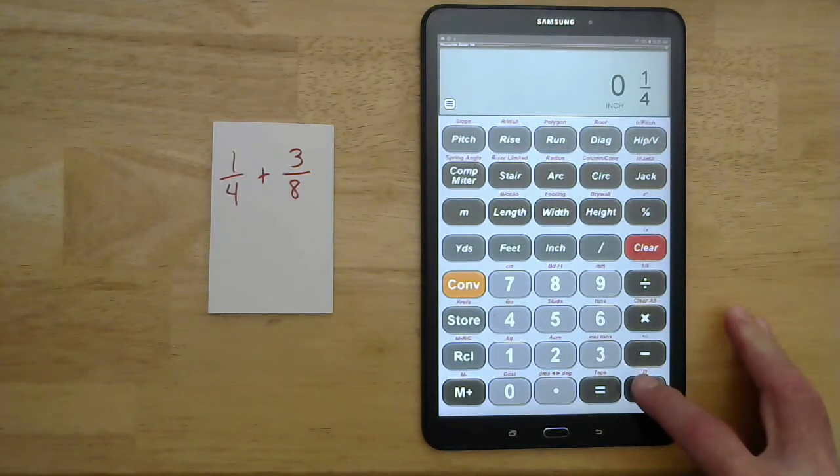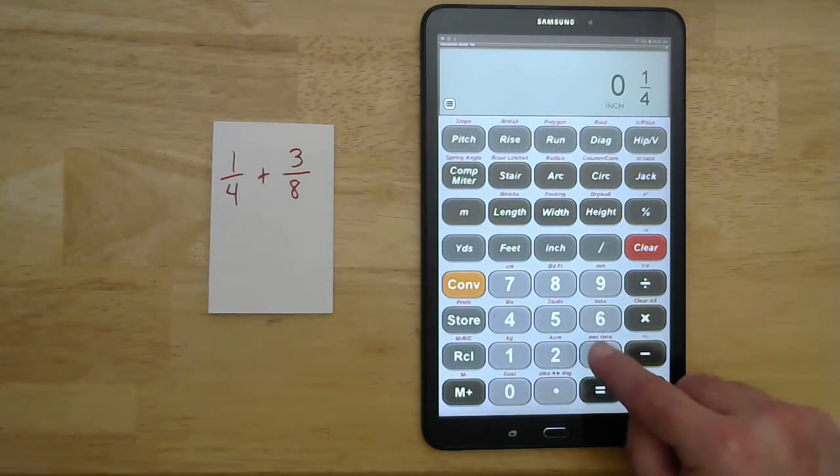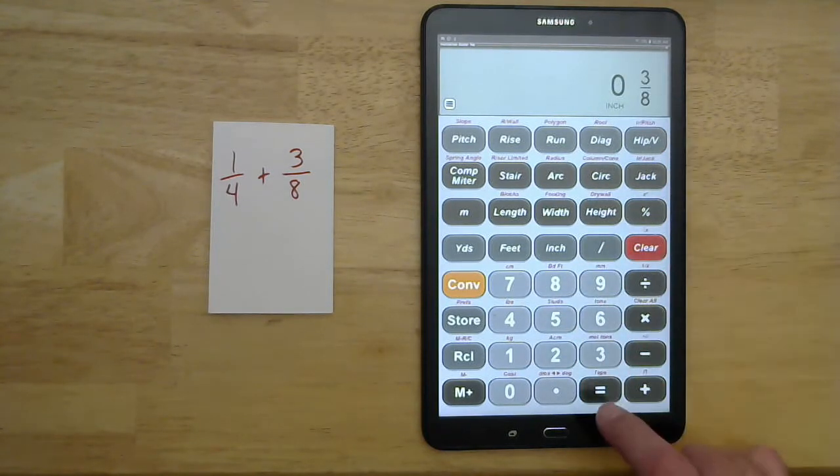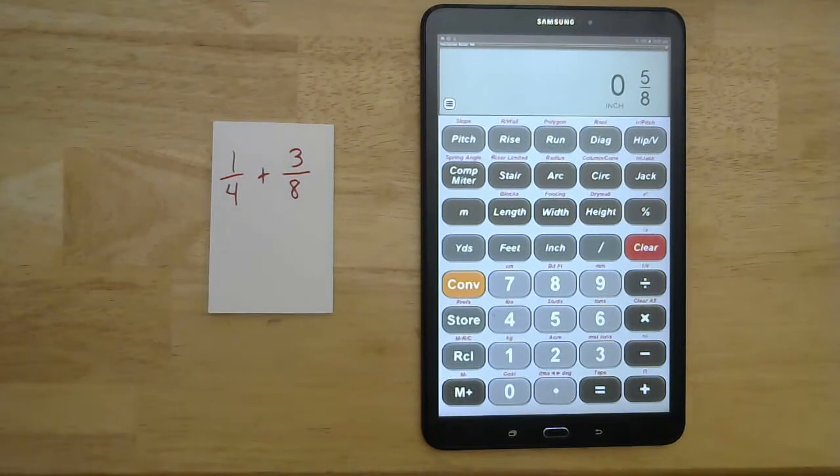And then I'm going to do plus three, fraction bar, eight. It displays my three-eighths. It equals—so one quarter inch plus three-eighths of an inch is five-eighths of an inch.